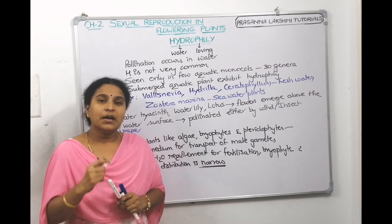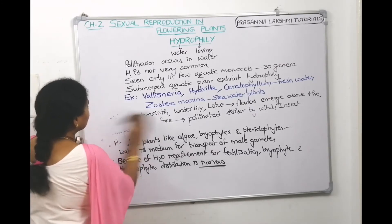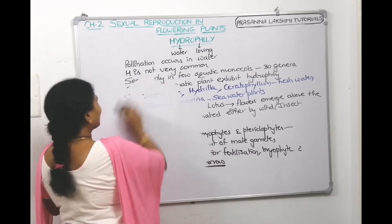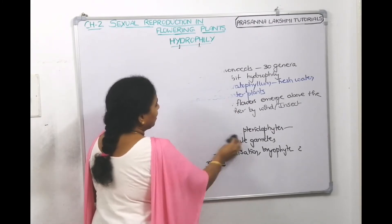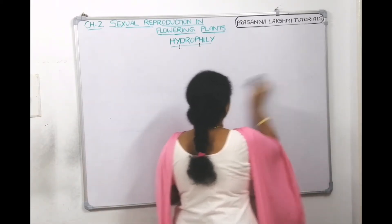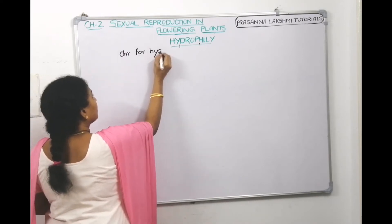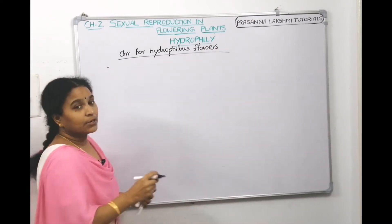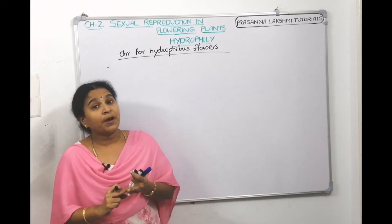Now let us talk about the characteristics of hydrophilous flowers. Is color required? Is nectar required? Is odor required? Water cannot identify color, nectar, and such things. All those are characteristics of insect-pollinated flowers. So color is not required, the flower need not be big, odor need not be there, nectar need not be there. The first characteristic: flowers are small and not very colorful.